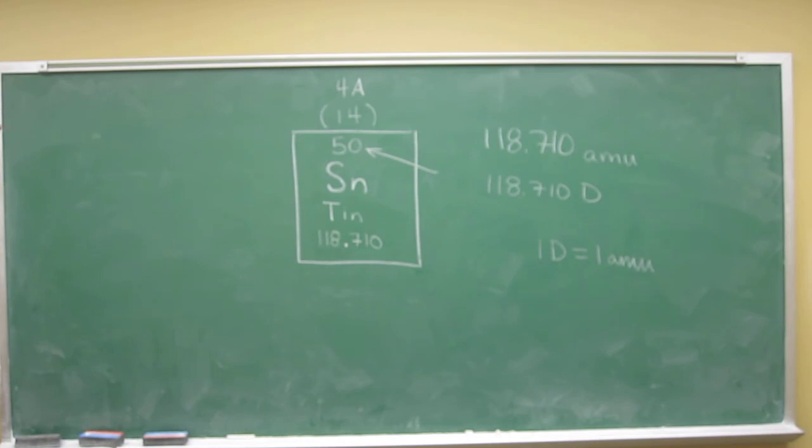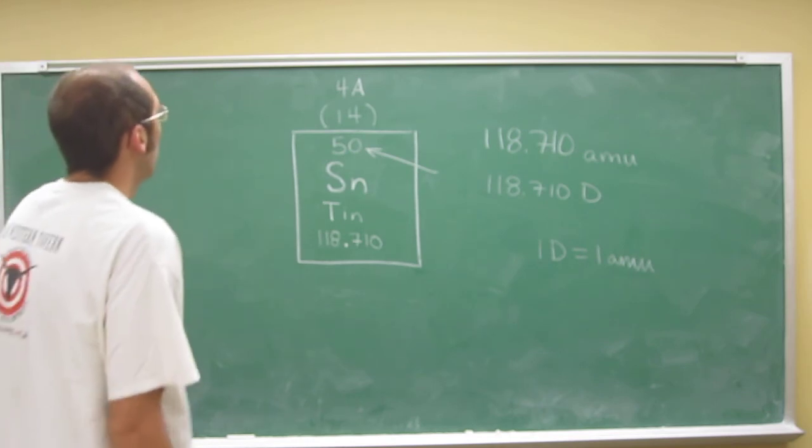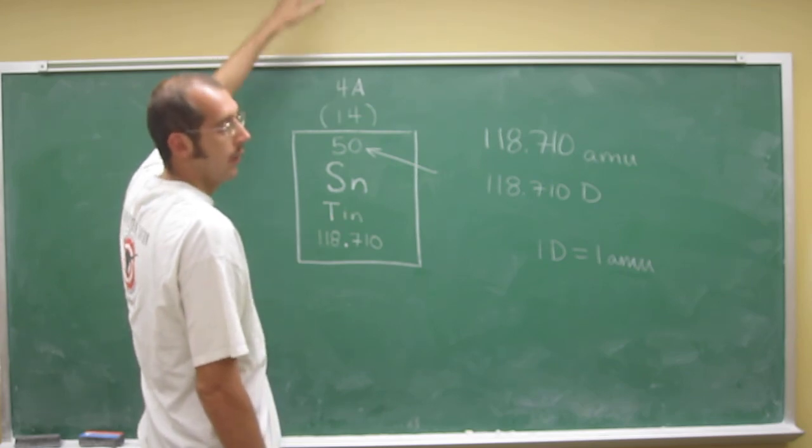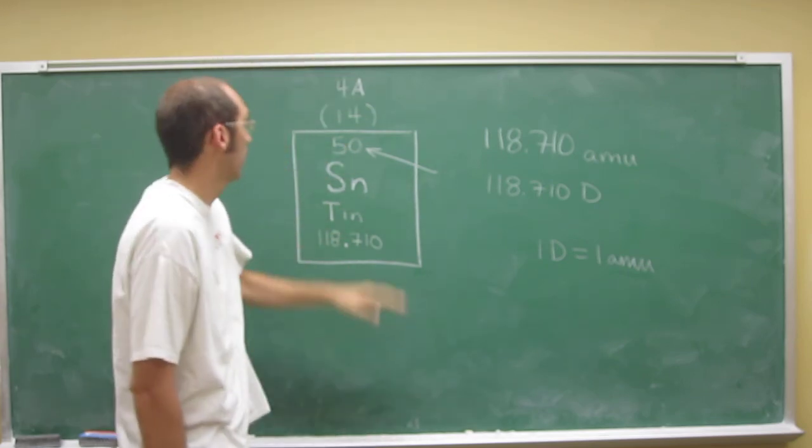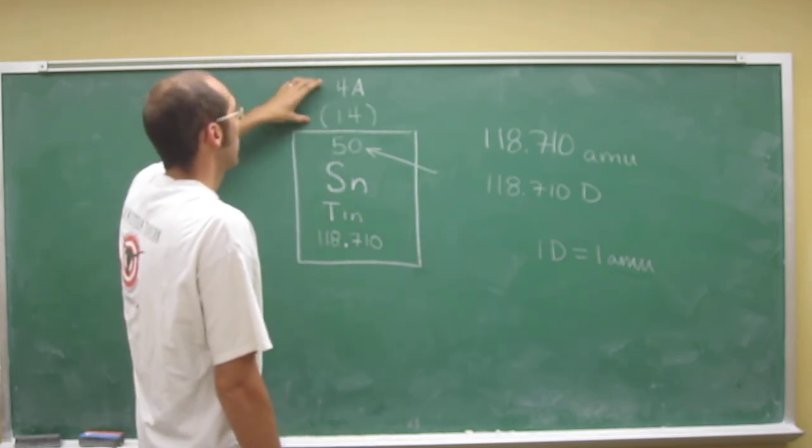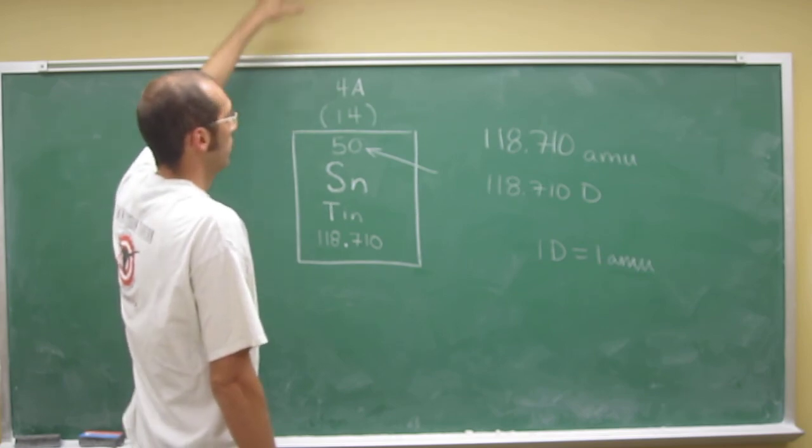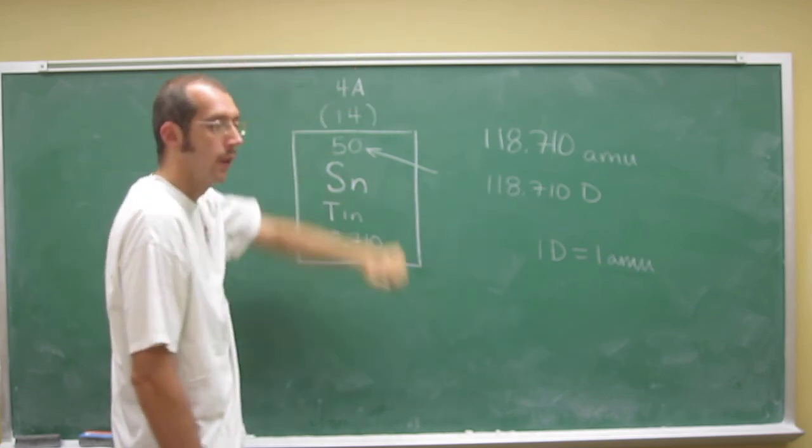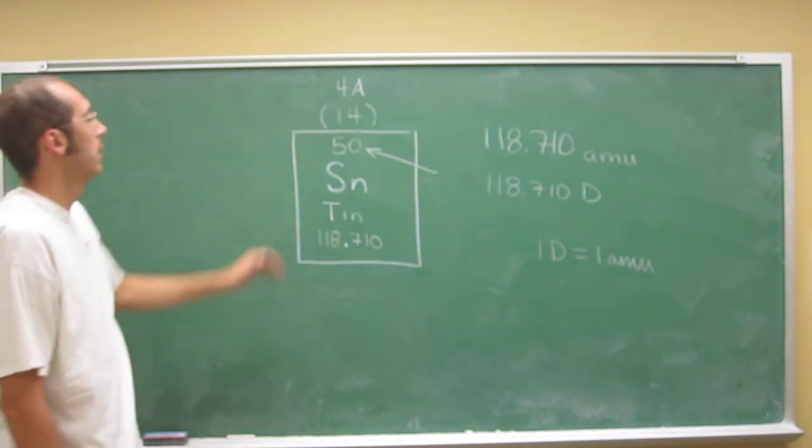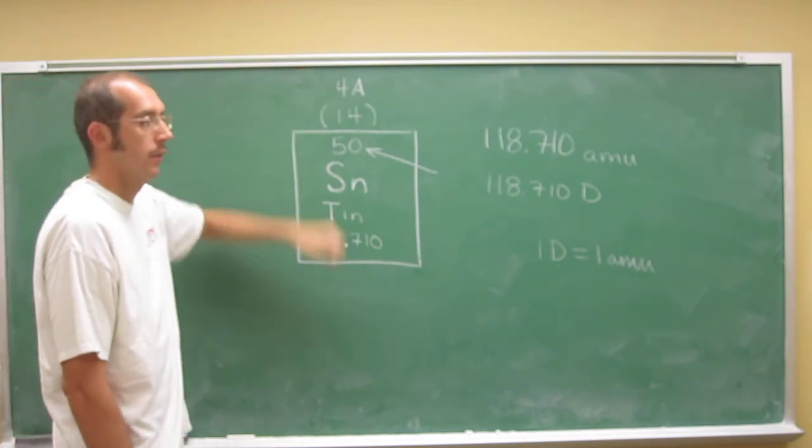What group is it in? This is usually found at the very top. Tin is way down in the periodic table, but the group number is found at the top of the column. This is group 4A or 14.